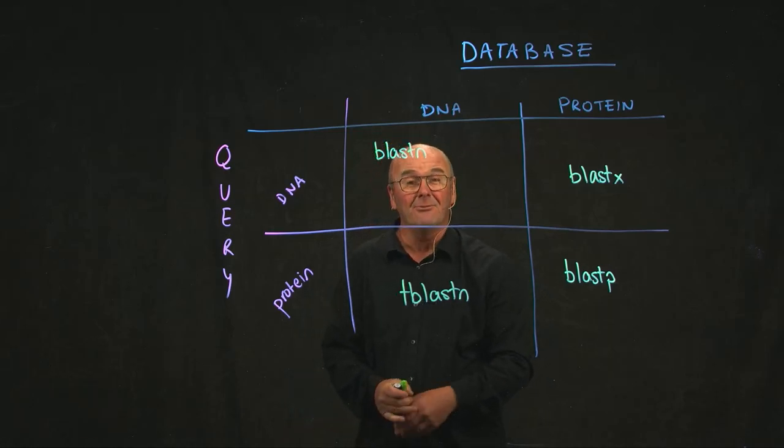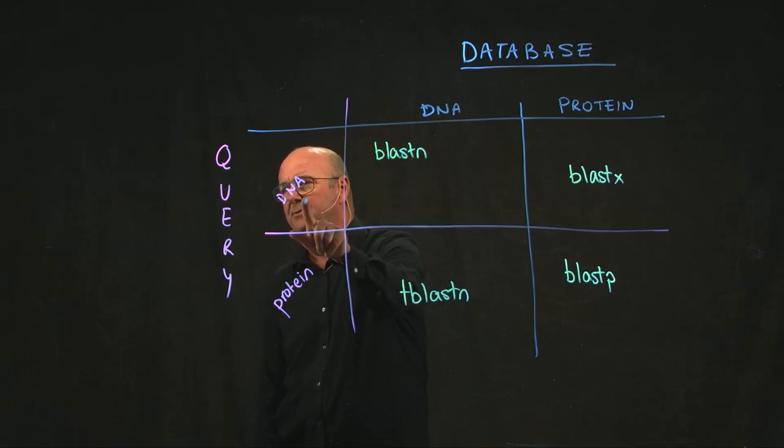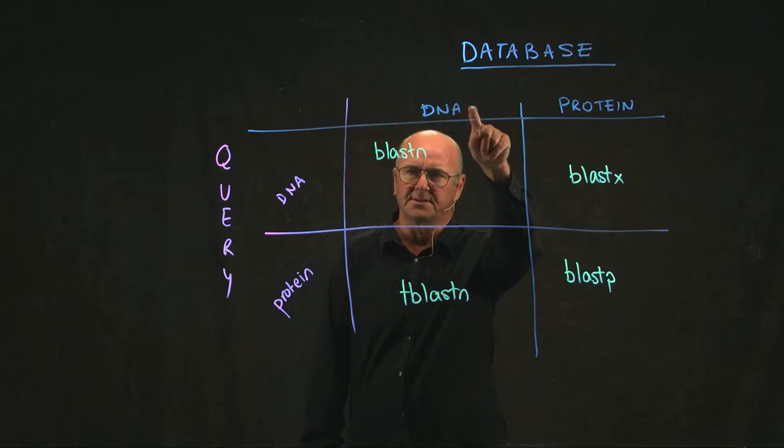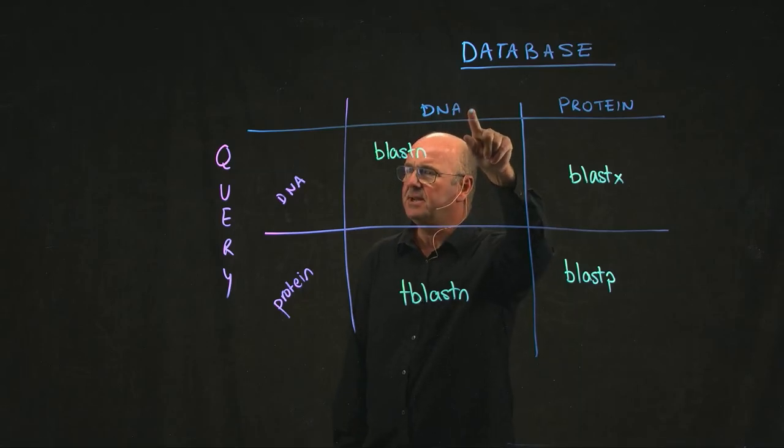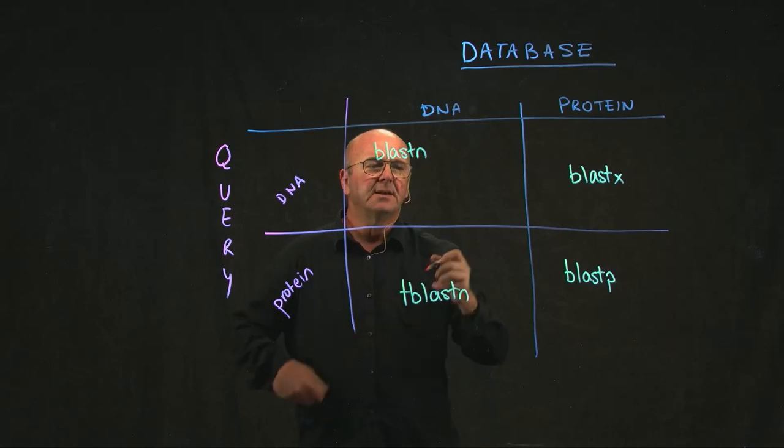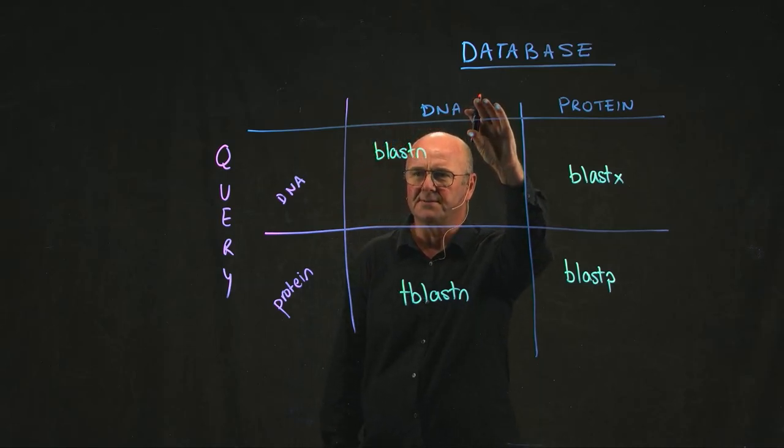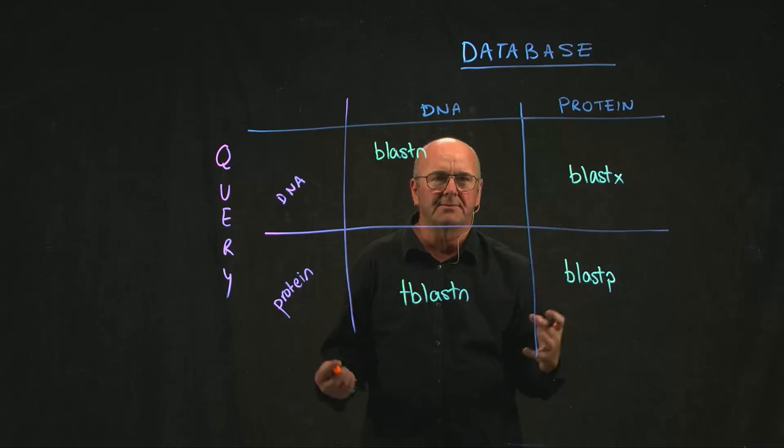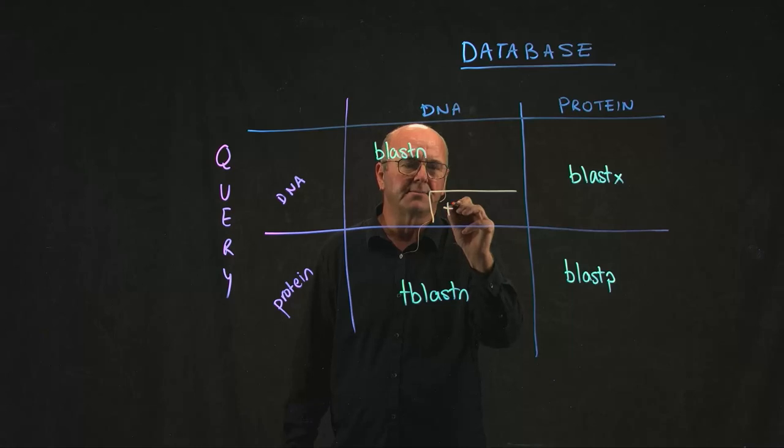And then if we want to be really crazy, what we could say is we've got a DNA sequence and we want to compare it to a DNA database. But we think the best comparison is going to be in protein space. So we can translate our query in all six reading frames and we can translate our database in all six reading frames and do all the pairwise combinations to find the best matches. That algorithm is called TBLASTX.